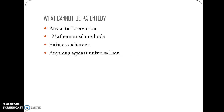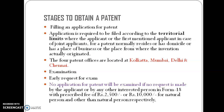What cannot be patented? If the invention or finding is an artistic creation, a mathematical method, a business scheme, or if it is anything which is against universal law, it cannot be patented. Whenever any of these things occur, we cannot provide a patent to the patentee.